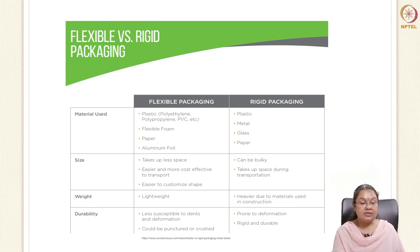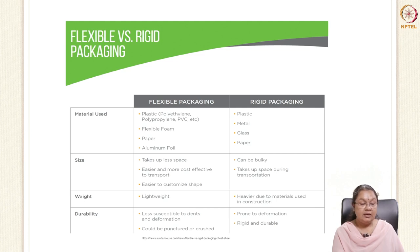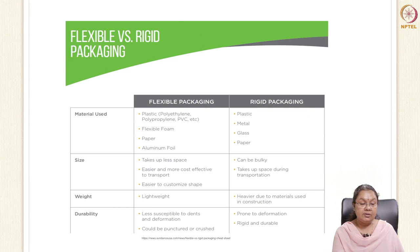Rigid packaging materials are prone to deformation, though they are durable. Flexible packaging materials can be punctured or crushed if not handled properly. The weight is lesser for flexible packaging materials, whereas it is heavier for rigid packaging materials.